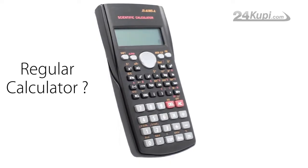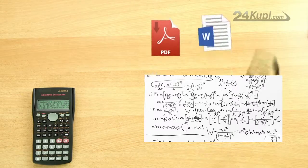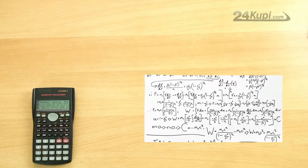24 KUPI looks like a regular scientific calculator, but with incredible features. It can store huge text files along with your difficult equations.